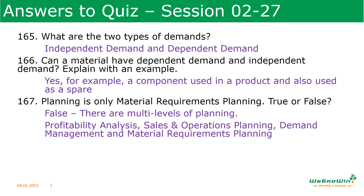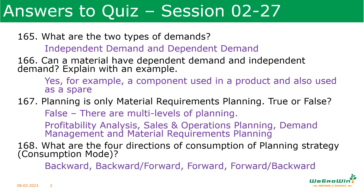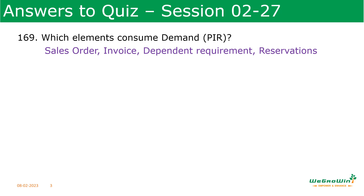What are the four directions of the consumption of planning strategy? In the MRP3 view there is a consumption mode. The directions are: backward direction, backward then forward, forward direction only, or forward and backward. The elements that consume demand are sales orders, invoices, delivery requirements, and reservations.